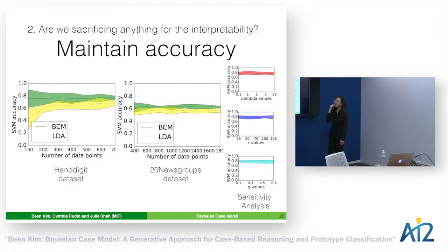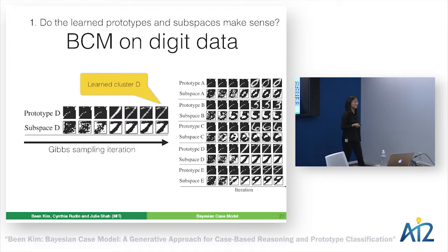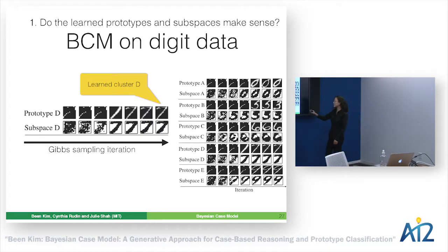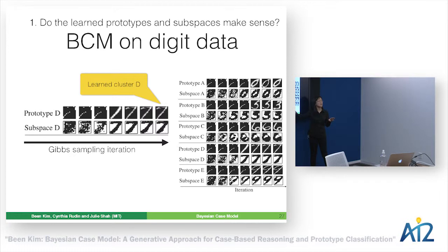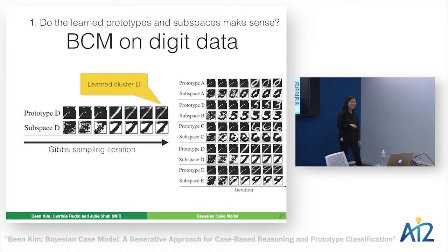An audience member asked for clarification: each black box shown is one data point, and I'm showing you which data point is selected as prototype at each Gibbs sampling iteration — not the data point evolving. An early iteration selected a very weird-looking digit, which I verified actually exists in the dataset. An audience member then asked how BCM differs from clustering with PCA.